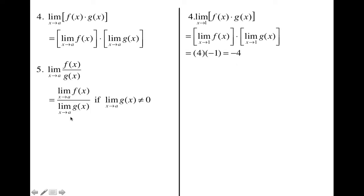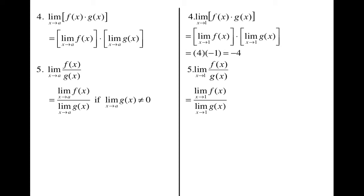The next limit law is division. Same idea: split them up, take the limit of each one separately, and then divide. Now since we have division, the denominator cannot equal 0. So in our example, we take the limit as x approaches 1 of f of x divided by g of x, split them up — we know this is 4 and this is negative 1 — plug it in, and we get negative 4.